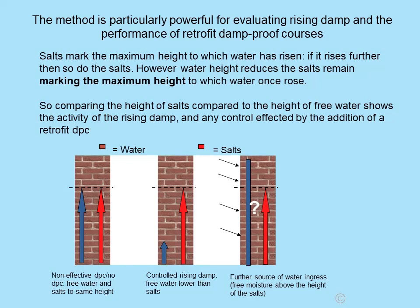The drawing on the left shows a non-effective DPC — there's free water present to the height of the salts. The centre diagram shows salts up to a given height but water rising only to a much lower height, meaning the water has dried down from the original height as indicated by the salts. The third example shows salts to a certain height but free moisture rising above this, indicating a further source of water ingress. How effective a damp proof course would be in that situation we don't really know, because we don't know how much of the water at lower level is still due to rising damp or how much is due to water penetration.